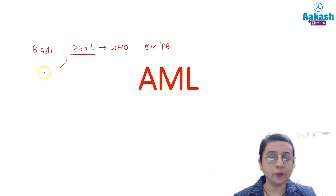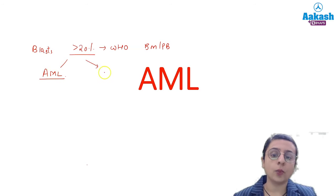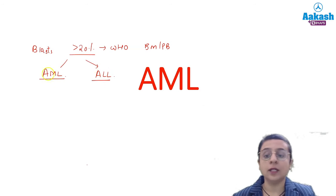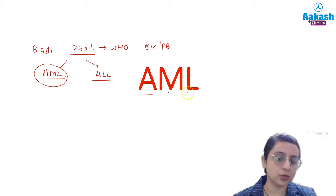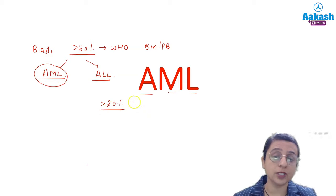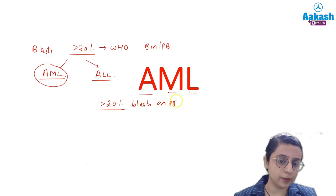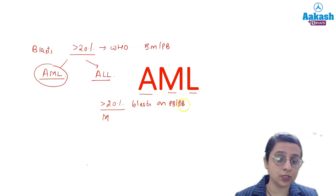Now this can be of myeloid lineage — if myeloid lineage, it will be a case of AML; and if it will be of lymphoid lineage, that will be a case of ALL. So today we will start with AML, that is Acute Myelogenous Leukemia — presence of more than 20% blasts in bone marrow or peripheral blood that are of myeloid lineage.